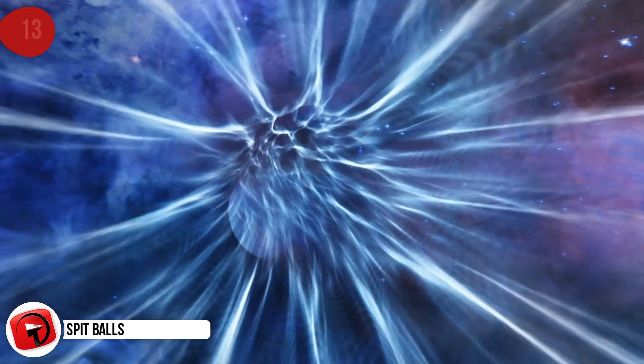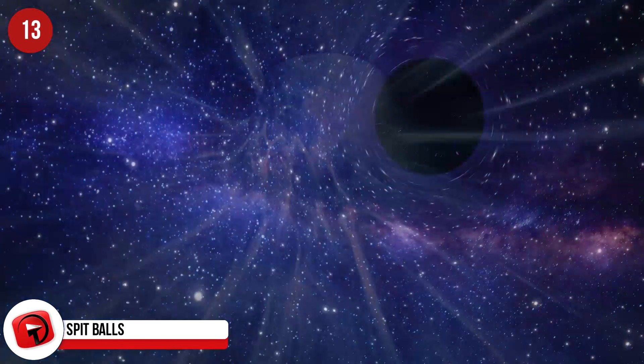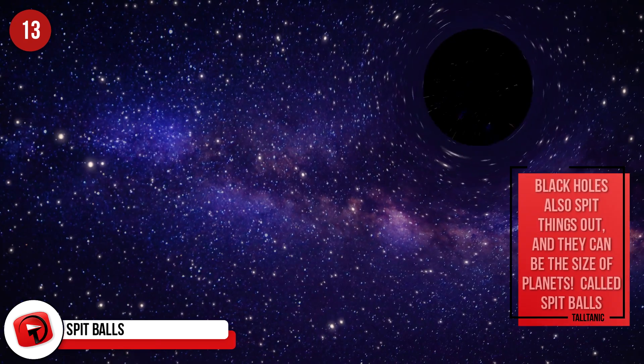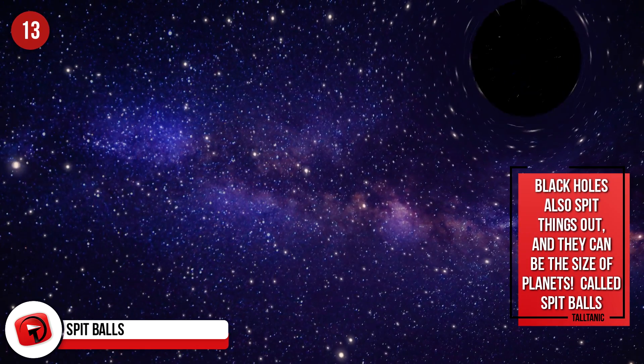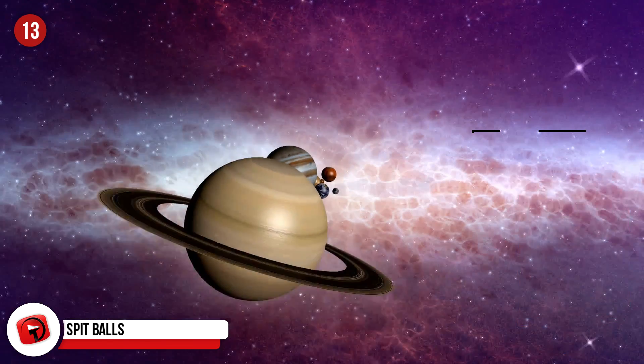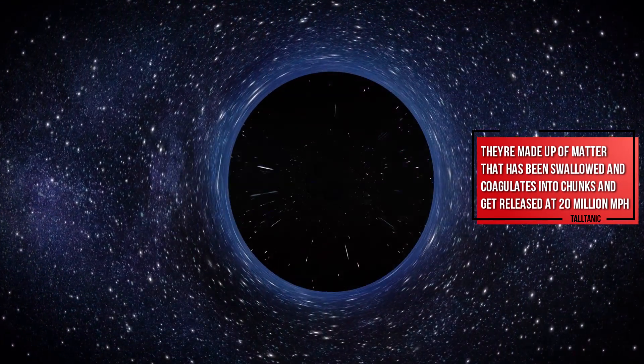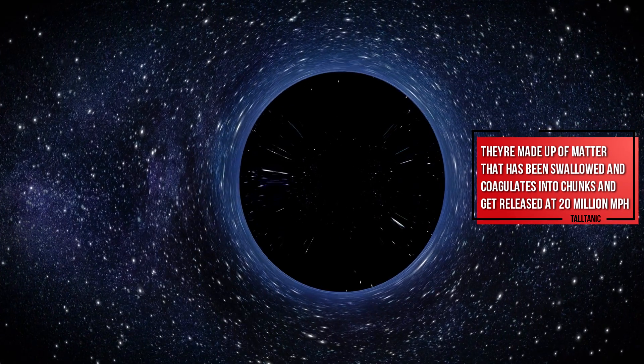Spitballs. You've heard how destructive these holes can be because they gobble up everything that comes close to them, but here's more disconcerting news. Black holes also spit things out, and they can be the size of planets, called spitballs. They're made up of matter that has been swallowed and coagulates into chunks and gets released at 20 million miles per hour.